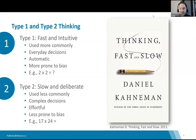It's interesting that this talk follows Dr. Soman's talk, because he focuses a lot on how we can think about type 2 slow and deliberate thinking. Today I'm going to talk about how we can take advantage of the fact that people may have cognitive biases and try to make things a little bit easier for people to do the right thing.